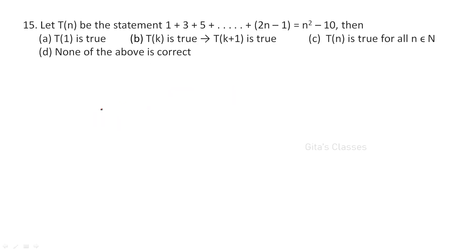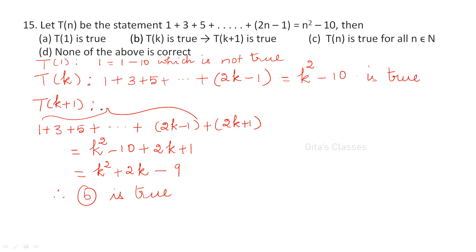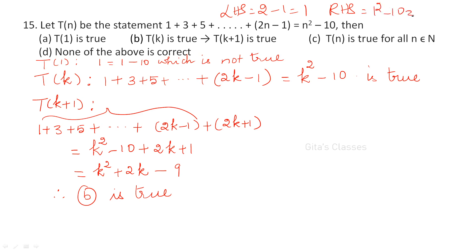Now this is a different question. Here you have to check T(n). First, is T(1) true? The general term is 2n - 1, so for n = 1: LHS = 1. But RHS is n² - 10 = 1 - 10 = -9. Since 1 ≠ -9, T(1) is not true. So that option is eliminated.